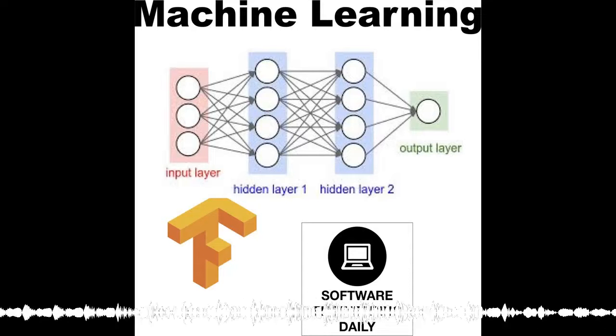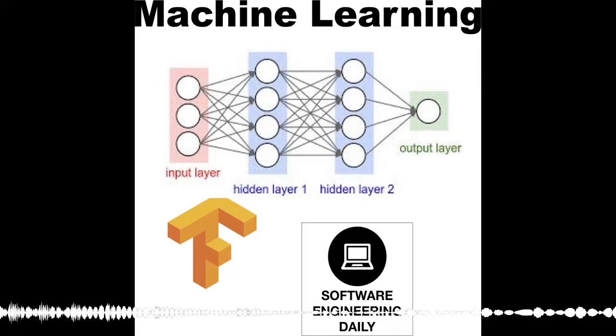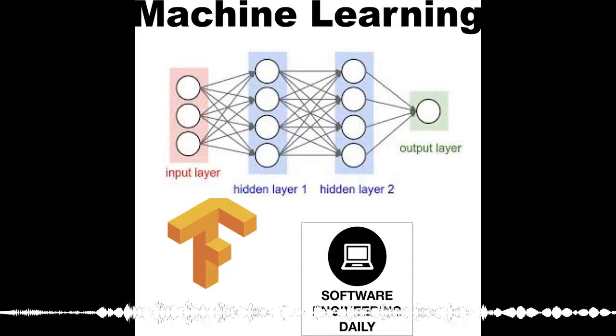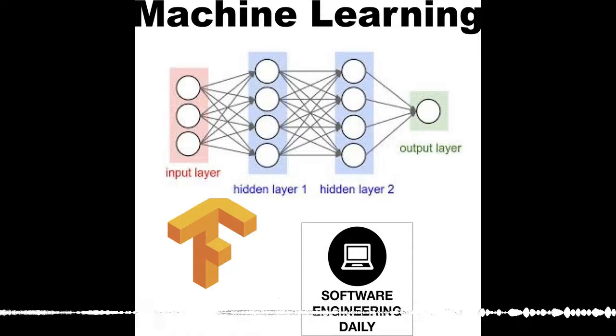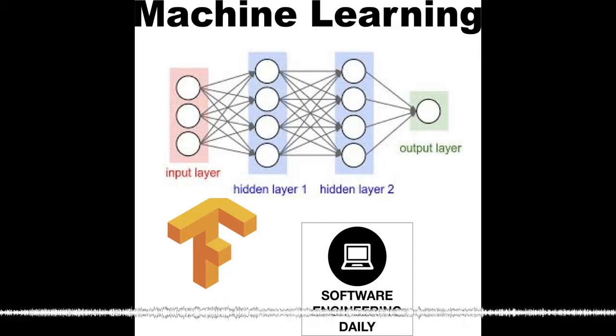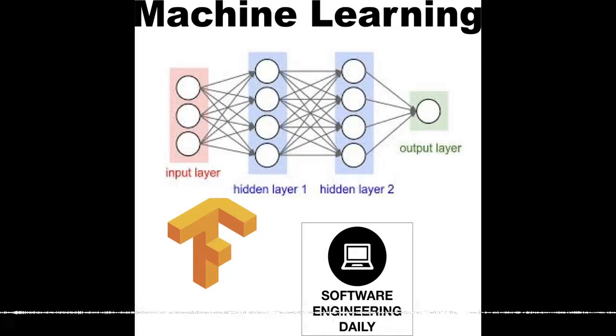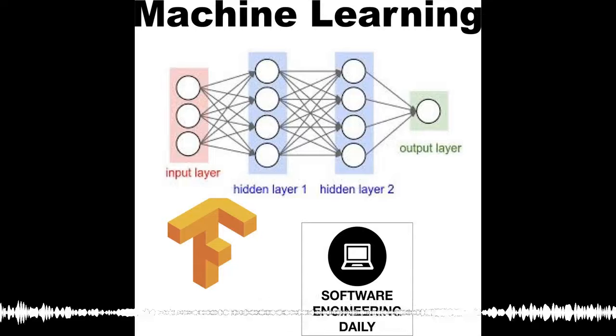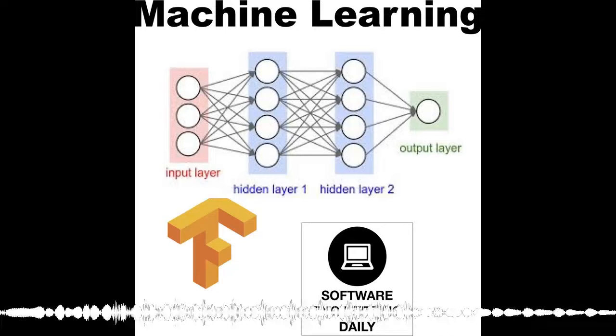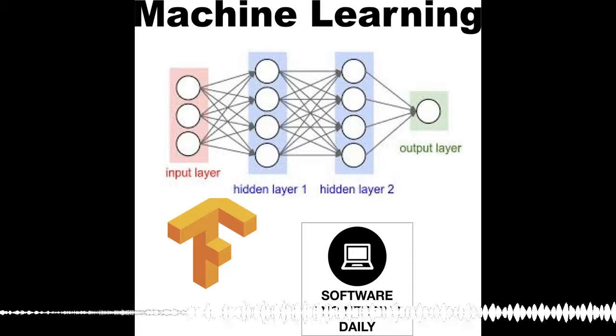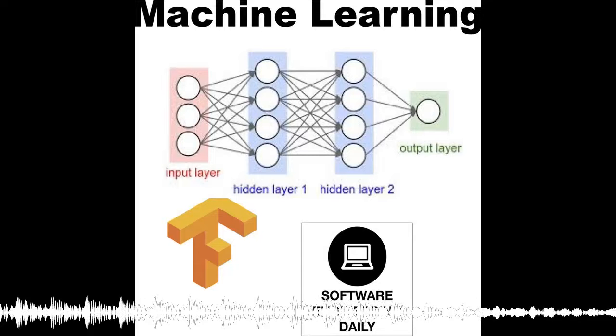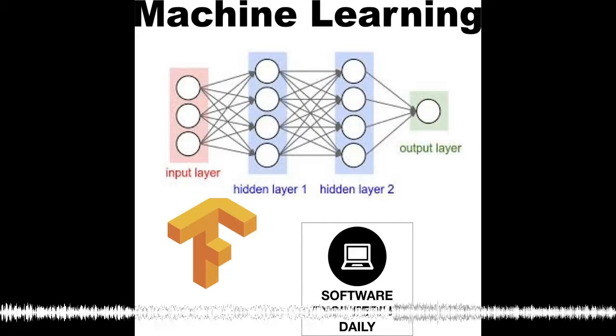Software Engineering Daily is having our third meetup, Wednesday, May 3rd at Galvanize in San Francisco, and the theme of this meetup is going to be fraud and risk in software. We're going to have some great food, some engaging speakers, a friendly intellectual atmosphere, and to find out more, you can go to softwareengineeringdaily.com/meetup. We would love to get your feedback on Software Engineering Daily also. Please fill out the listener survey. It's available at softwareengineeringdaily.com/survey.